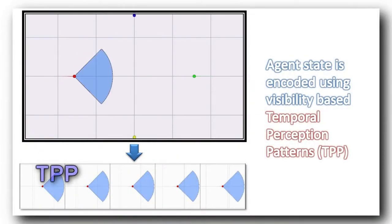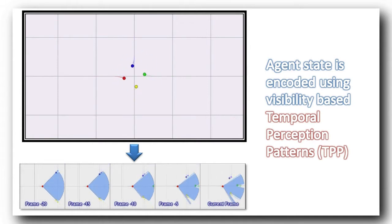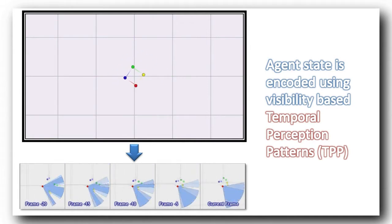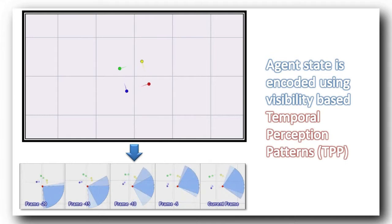Agents sample the environment at regular time intervals recording visibility-based interactions. A temporal perception pattern consists of a number of consecutive observations grouped together to encode the state of the agent.